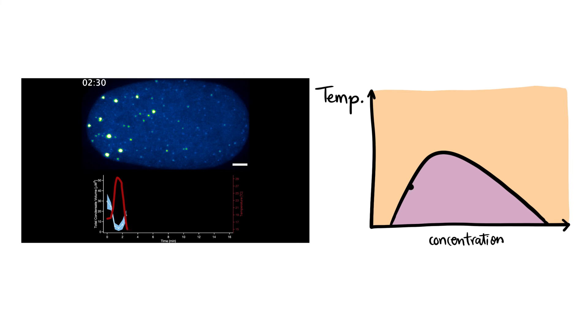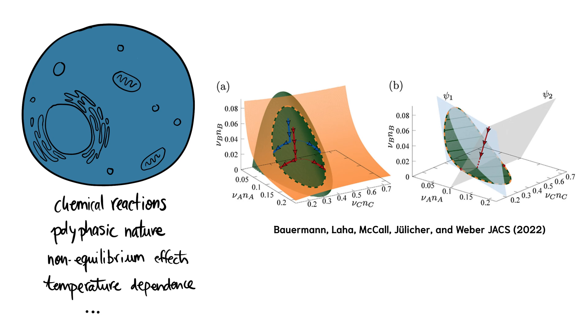Despite the simplicity of this two-component model, it can explain the dynamical behavior of condensates. Other behaviors may require a more precise description of the cell, which makes the phase diagram much more complex.